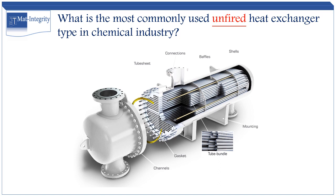What are the most commonly used heat exchangers in industrial process plants? By far, the shell and tube heat exchangers are the most commonly used. They are frequently selected for several applications such as liquid or gas cooling, vapor or steam condensing, and liquid evaporation.